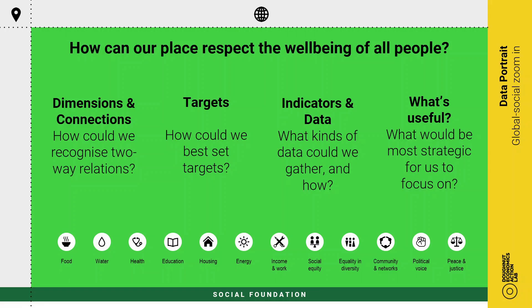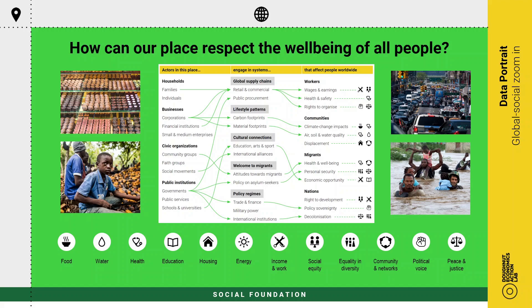Where do we start on how to measure the global responsibility to respect the well-being of all people? There are so many ways that we are connected both positively and negatively. A useful table provides an entry point to envisioning some of the many ways that households, organizations, and public institutions engage in systems that can affect people worldwide — as workers, communities, migrants, and entire nations. Major connections flow through global supply chains, through the climate and ecological impacts of lifestyle patterns, through cultural connections, policies on immigration and asylum seekers, and broader international policy regimes with an uneven playing field tilted towards the most advantaged and often enforced by international institutions.